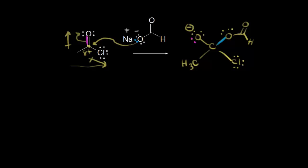The next step in the mechanism for nucleophilic acyl substitution is to reform our carbonyl. When we reform our carbonyl, we can't have five bonds to carbon, so we have to lose something as a leaving group. We have several possibilities. One possibility is to have these electrons come off onto the chlorine to form the chloride anion as a leaving group, with a negative one formal charge.